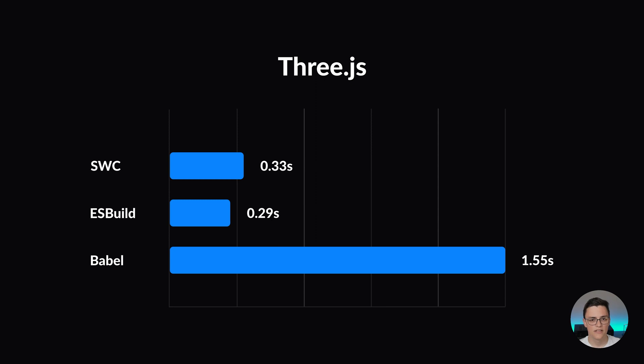Here, ESBuild is again the fastest build tool, with SWC coming in second, and Babel continues to be the slowest build tool by a large margin. I did not find the need to experiment with larger projects, as they are very rare. These libraries represent well the average size of a web application or components library.